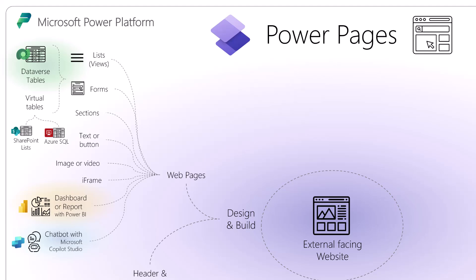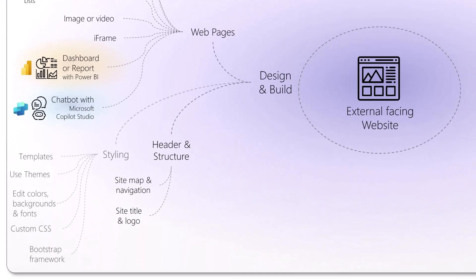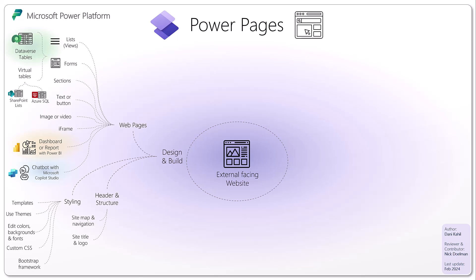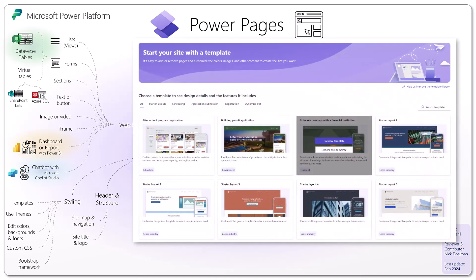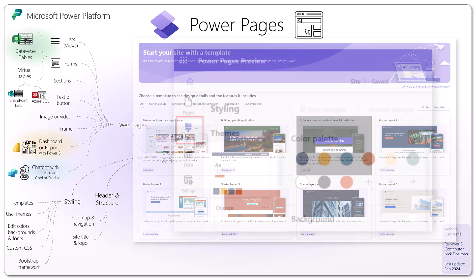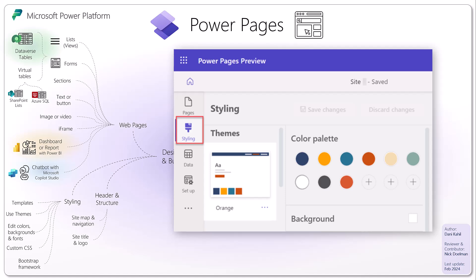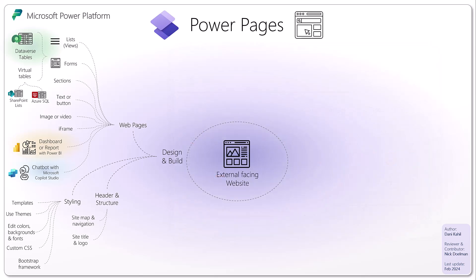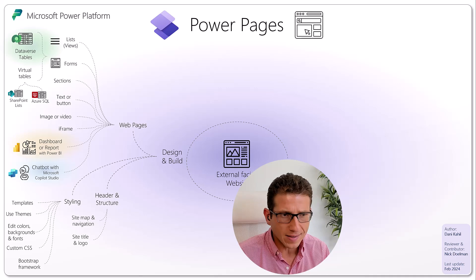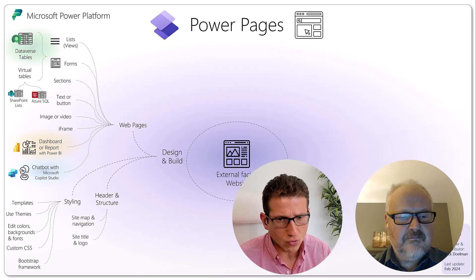The next element is styling, where you can style your site to the desired layout using templates. When you start a new website you can pick from existing templates and also get themes that you can tweak — changing the colors, background, and fonts of those themes.